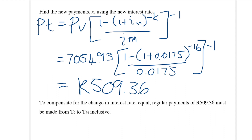To compensate for the change in the interest rate, equal regular payments of R509.36 must be made from t9 to t24. This answer is in line with what we expected — the original payments were R499 and we expected a slight increase due to the increase in the interest rate. You should now attempt exercises on pages 93 and 94: numbers 4 and 5 are on missed payments and number 6 is on a change in interest rate.